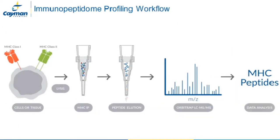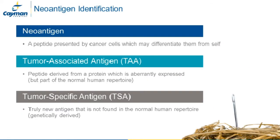The workflow for immunopeptidome profiling is as follows: we lyse the cells or homogenize the tumor and immuno-affinity enrich the MHC complexes using antibody-conjugated resins. Peptides are gently eluted from the bound complexes and subject to LC-MS/MS, from which a list of peptides is developed using relevant databases. I will discuss some key considerations for each step in this process.